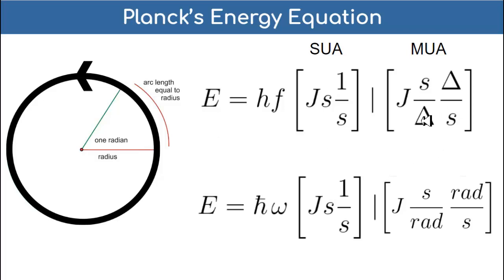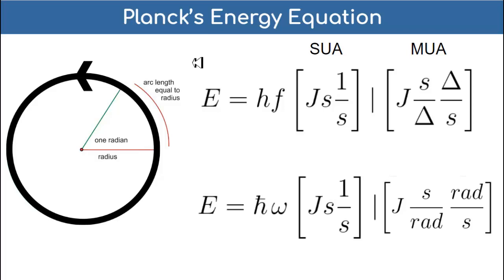I'm more interested in converting from the domain of the radian to the domain of the cycle - I want to see if I can do all of physics in the domain of the cycle, especially if we want to understand quantization. As you saw in the water wave analogy, the energy delivered to the shore is quantized by the whole cycle, the whole circle. The radian is only a partial arc length along the full circumference of the circle, and it doesn't seem logical for angular momentum or energy to be quantized by the arbitrary unit of the radian.